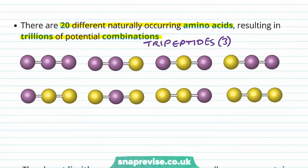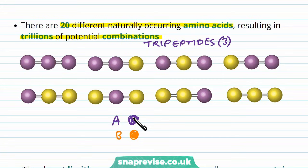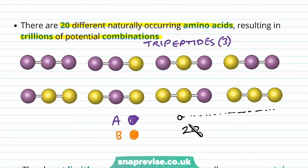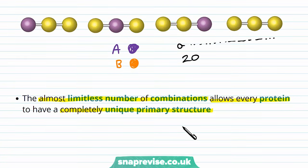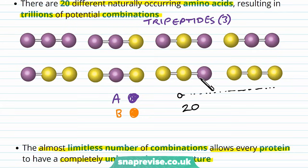and we chose only two different amino acids — A, the purple one, and B, the yellow or orangey one — you can see that even just with tripeptides, there are already eight different combinations with these two amino acids. Imagining a protein with many hundreds of amino acids and 20 different amino acids, there are so many combinations it's impossible to write them all down. This almost limitless number of combinations in the primary structure allows every protein to have its own completely unique primary structure, and therefore its own unique function too.